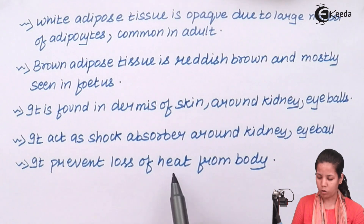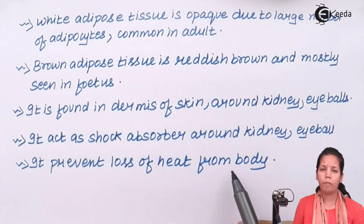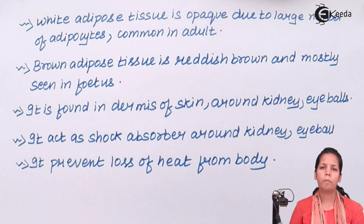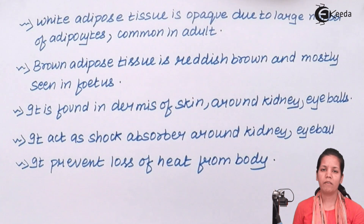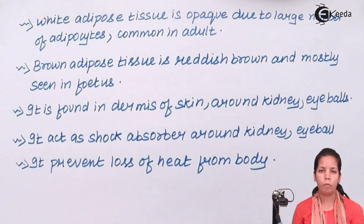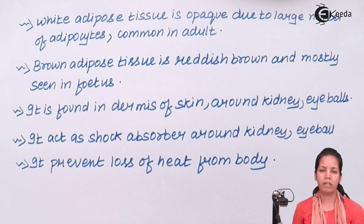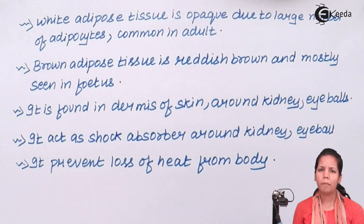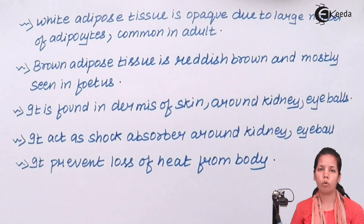Adipose tissue also prevents the loss of heat from the body by acting as an insulating material. In winters, when the temperature outside is very cold and your body temperature has to be maintained at 37 degrees Celsius, along with the warm clothes you wear, your adipose tissue tries to keep the temperature of your body constant and promotes warmth whenever your outside environment is colder than your body temperature.